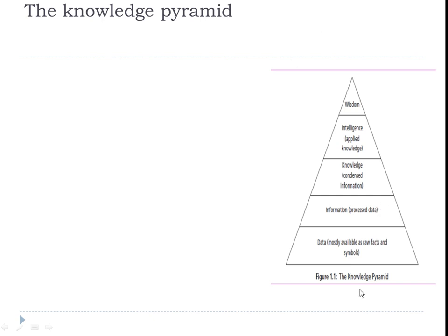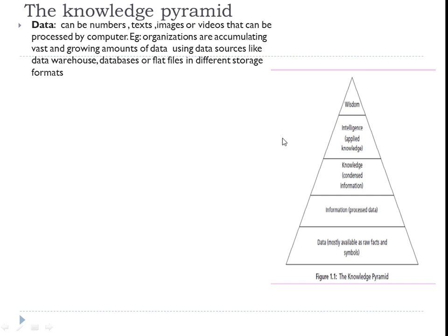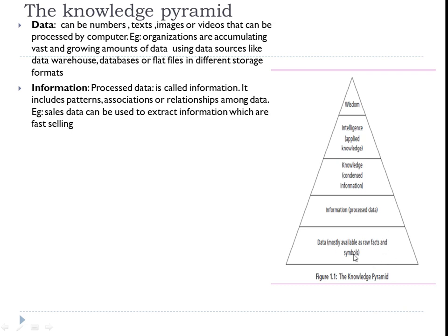Now coming to the knowledge pyramid — the lowest layer is data, which is the raw data, and as you go up you have information, then knowledge, intelligence, and wisdom. The data layer is basically numbers, text, images, or videos that can be processed by a computer. Organizations today are accumulating vast and growing amounts of data, which can be stored in various sources such as data warehouses, databases, or flat files. This data is just raw fact, so it has to be processed.